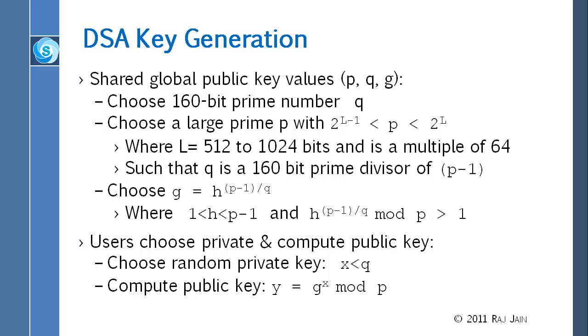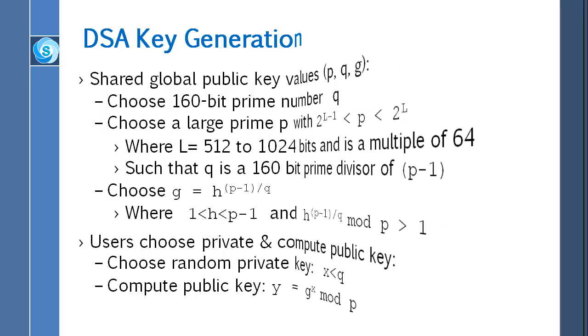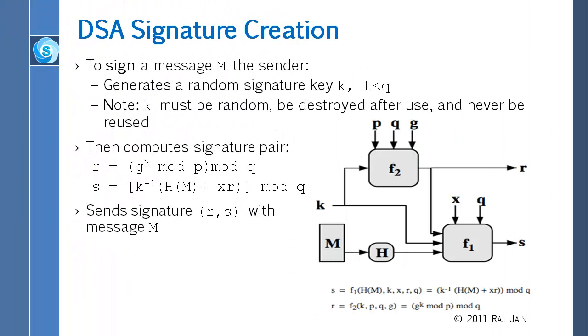What you do when you want to send the message is you select a message key X and you compute the public key for the message, G raised to X mod P. And to sign the message, you select, sorry, this is similar to Schnorr. Then you sign the message with K, and you do G raised to K mod Q, get R, and then K inverse mod Q, get an S. And that gives the signature R comma S.